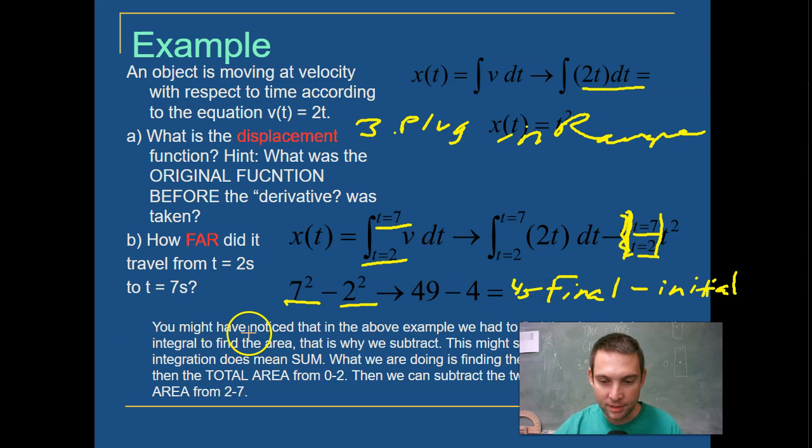You might have noticed in the above example, we had to find the change over the integral to find the area. This is why we subtracted. This might sound a bit confusing, but integration does mean sum. So what we're doing is finding the total area from 0 to 7, and then the total area from 0 to 2. And we can subtract the two numbers to get just the area from 2 to 7.